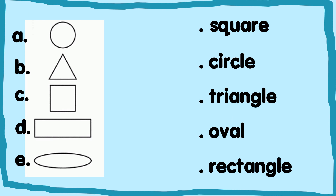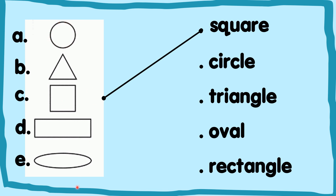Next. You need to underline the correct words to the correct picture — the correct shape given over here. The first one is square. Which shape is square? It's C. You make an underline over here. And the next one is circle. Which one is circle? Circle is round. You make an underline from circle to A.